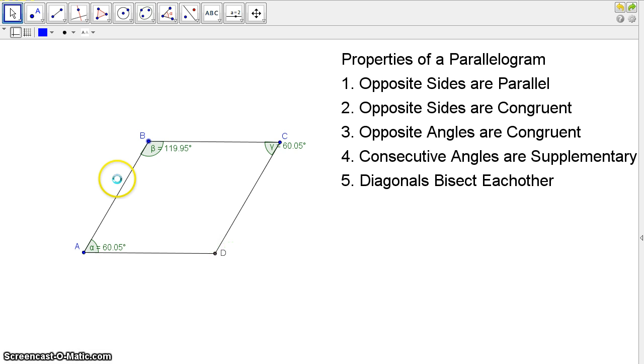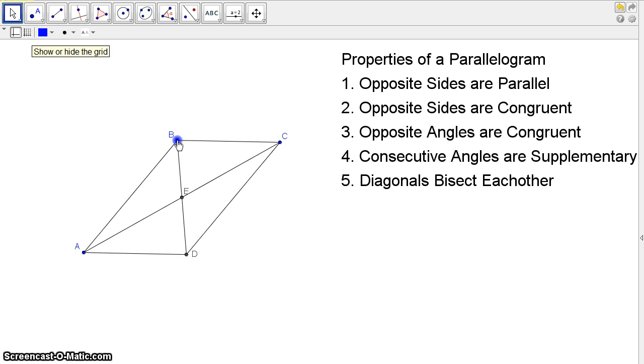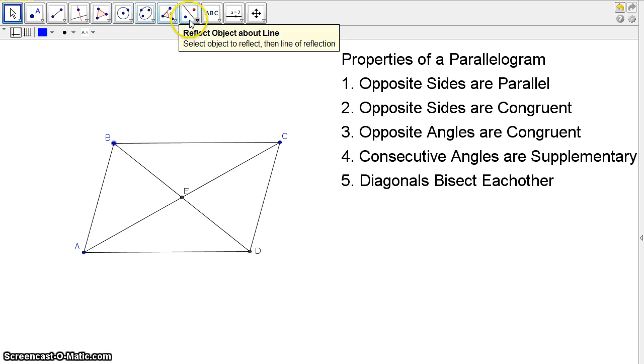Now the last thing we have is that diagonals bisect each other. So I'm going to draw the diagonals A to C, B to D. Now these happen to meet at a point right here, E. What we're not saying here is that the diagonals are congruent. Because if I move this, I can see that BD and AC are certainly not the same. What's happening here is that a given diagonal is cut into smaller pieces.